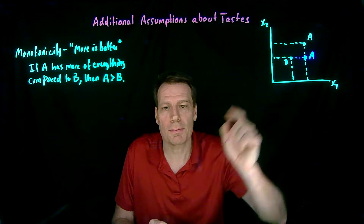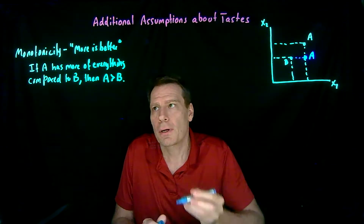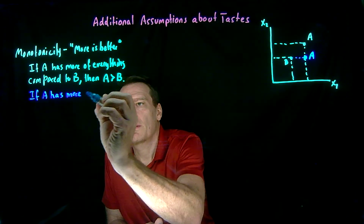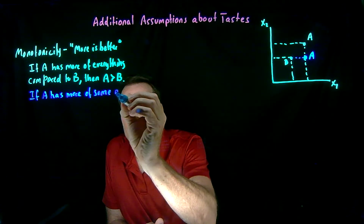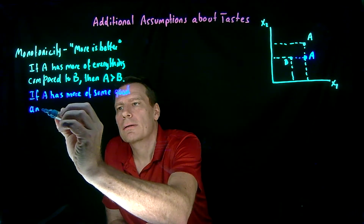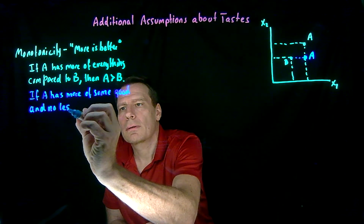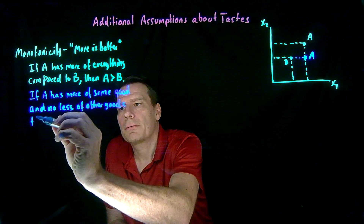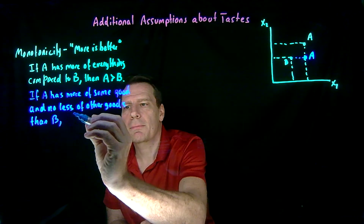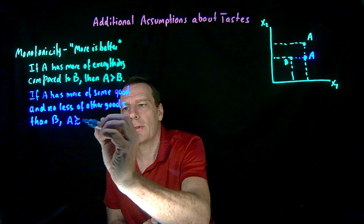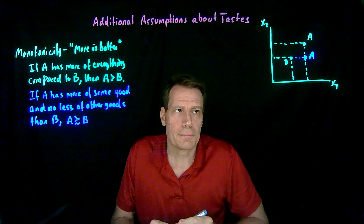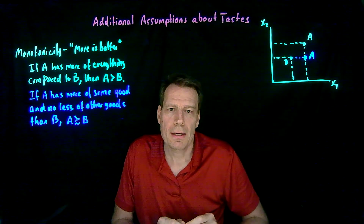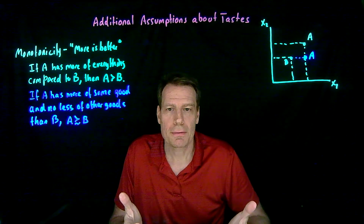In that case, you might actually be indifferent between A and B, but typically you'd prefer A to B. So if A has more of some good and no less of the other goods than B, the monotonicity assumption says that A must be at least as good as B. Why do we make that assumption? Well, economic choices are made in a world of scarcity where you have to make trade-offs, and so more is typically better, which is why we have to make trade-offs between things.